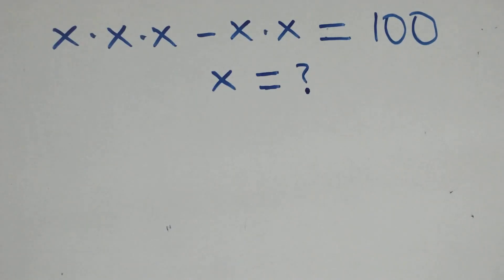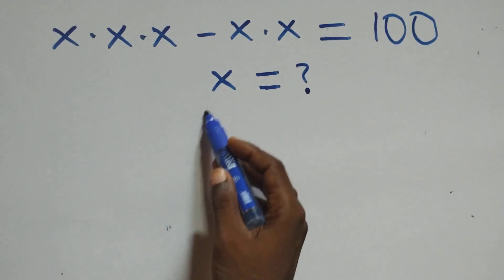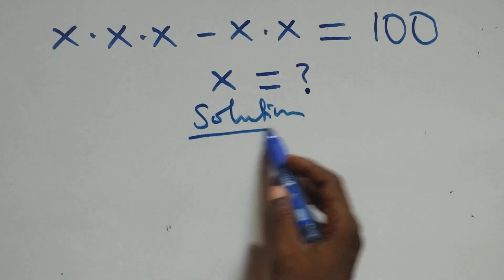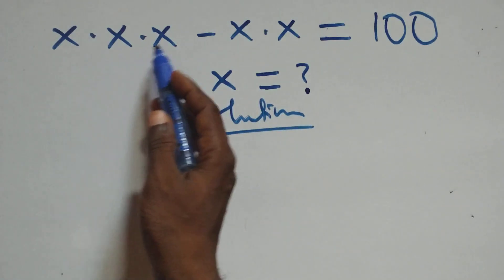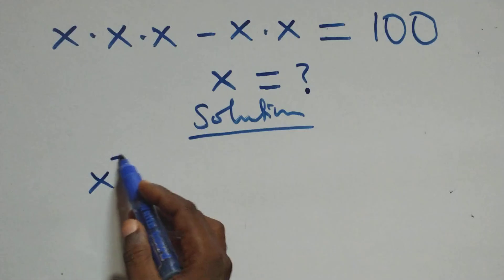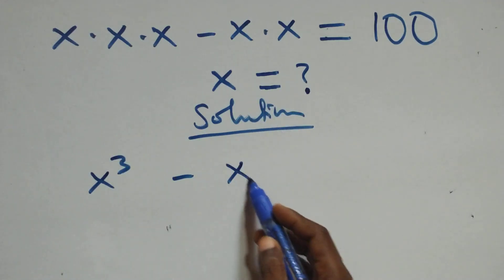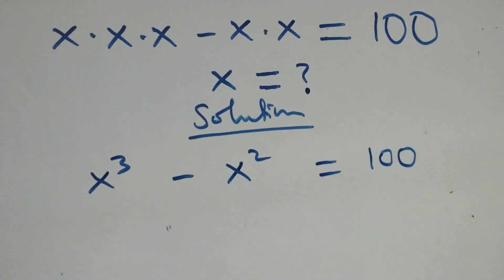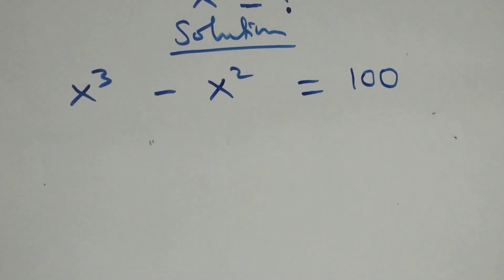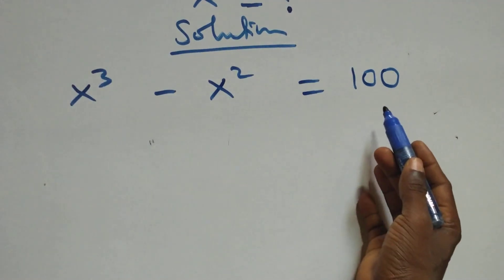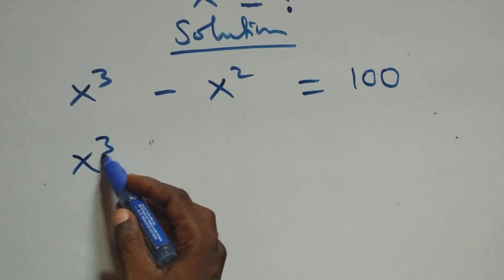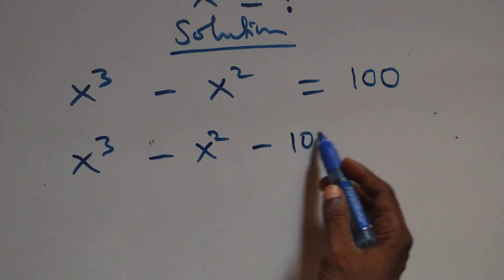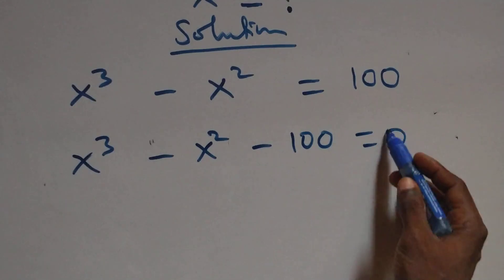Hello, you are welcome. How to solve this nice algebraic equation. We can write x times x times x as x raised to the power 3, minus x times x which is x squared, then equals to 100. Taking 100 to the left-hand side, we have x raised to the power 3 minus x squared minus 100 equals to 0.